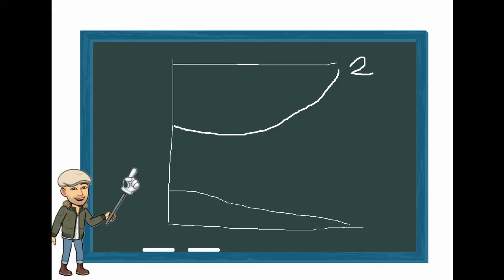Let's put the graph up. So, as you can see here, tone 2 rises up more. Tone 5 is similar, but it rises up at some point and then stops.